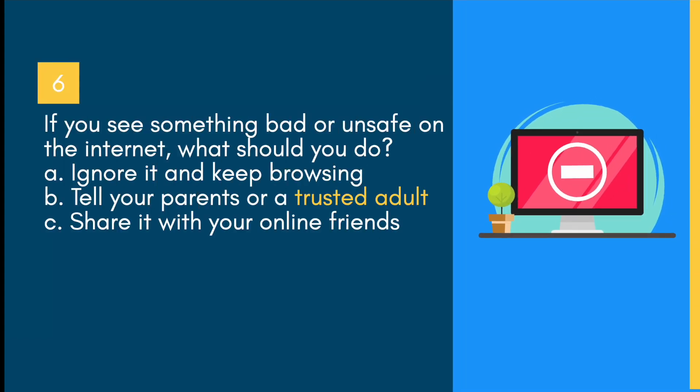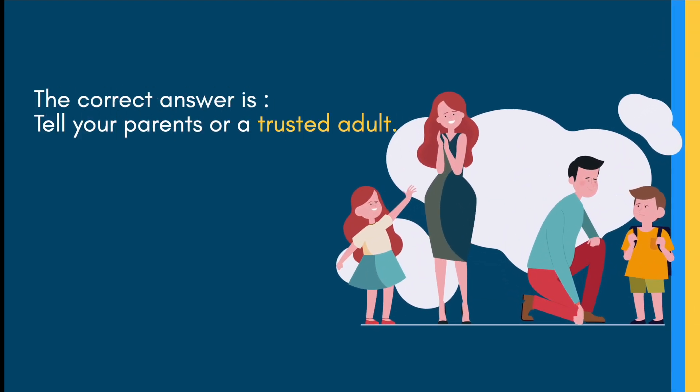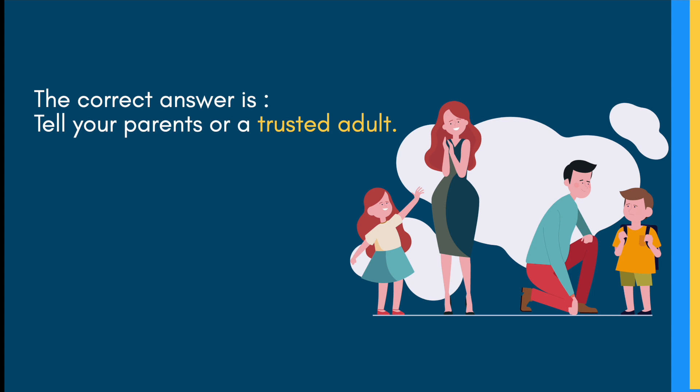If you see something bad or unsafe on the internet, what should you do? A) Ignore it and keep browsing, B) Tell your parents or a trusted adult, C) Share it with your online friends. The correct answer is: tell your parents or a trusted adult.